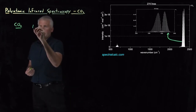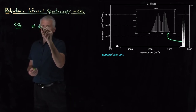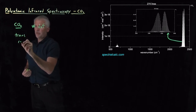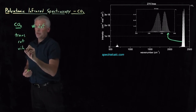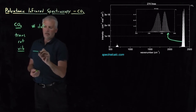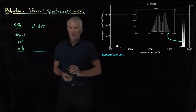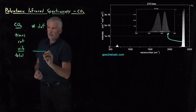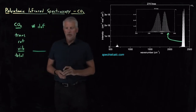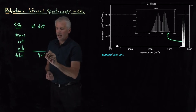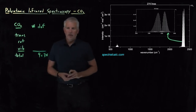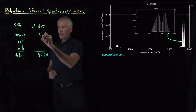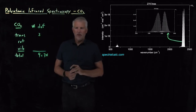If we count degrees of freedom, there might be translational motions, rotational motions, or vibrational motions. In total, since it's a triatomic molecule with three atoms, we expect nine total degrees of freedom. As with any molecule, three of them are going to be translations — it can move in X, Y, or Z.